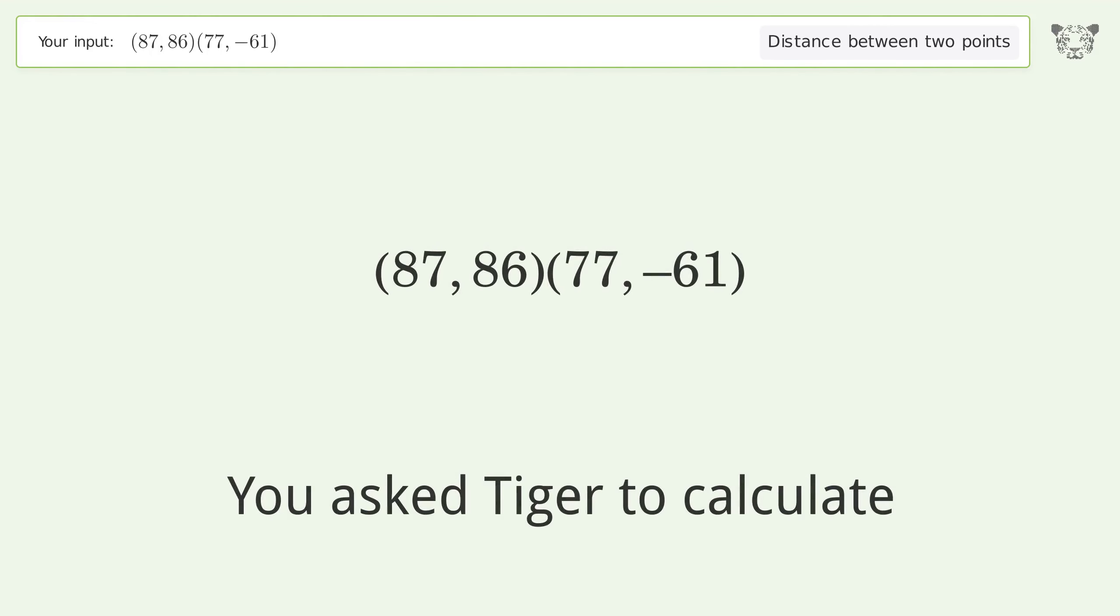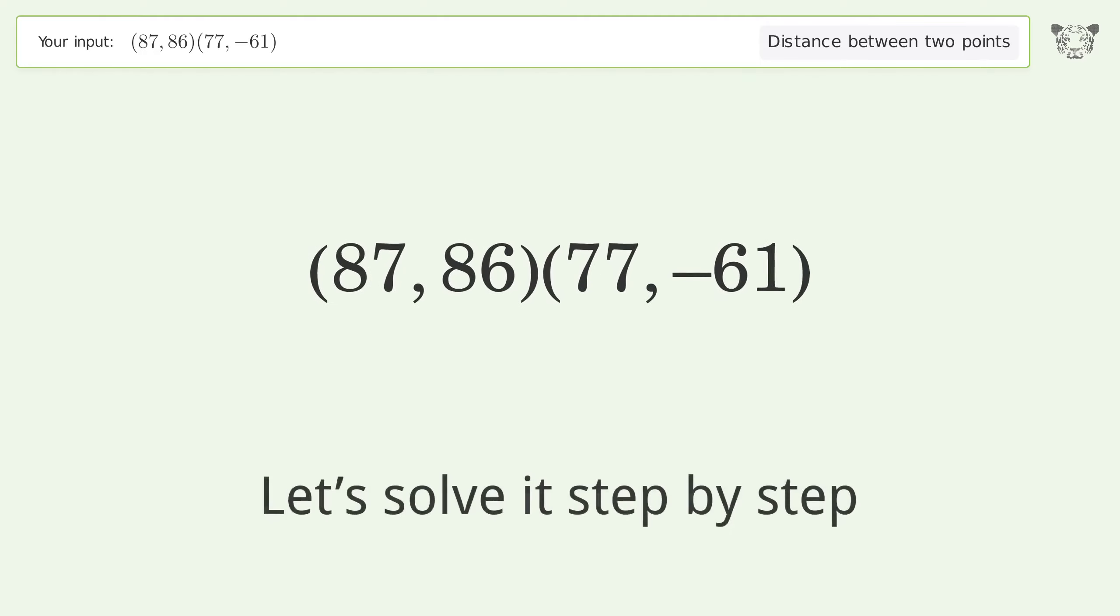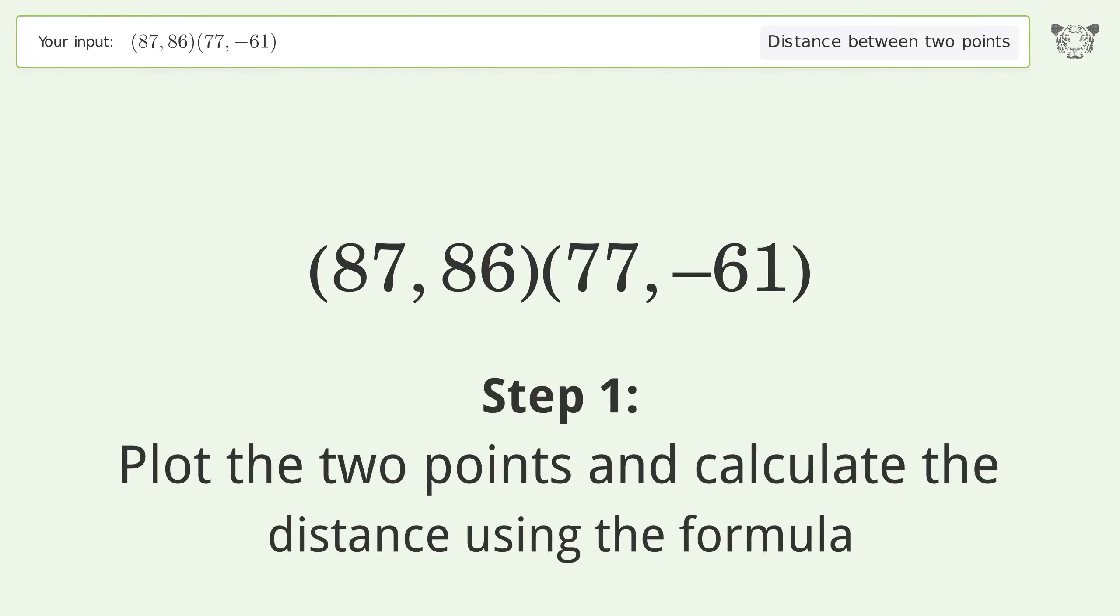You asked Tiger to calculate the distance between two points. The distance is the square root of 21709, or 147.34. Let's solve it step by step. Plot the two points and calculate the distance using the formula.